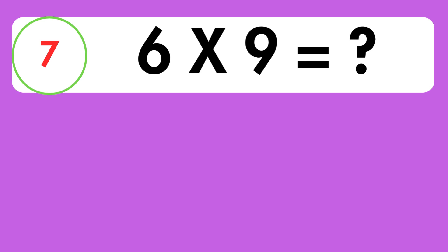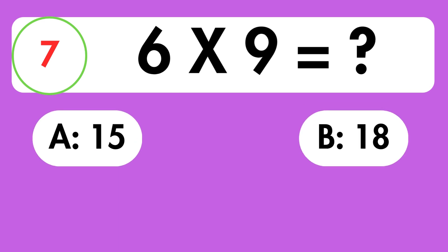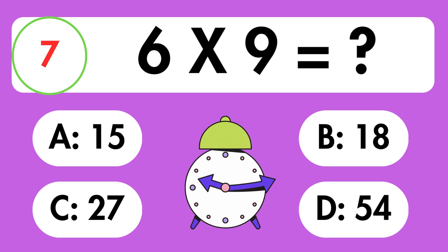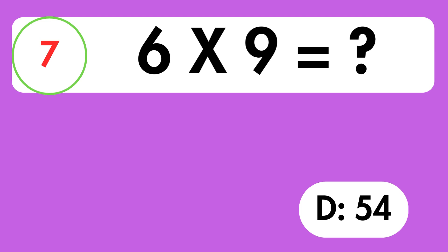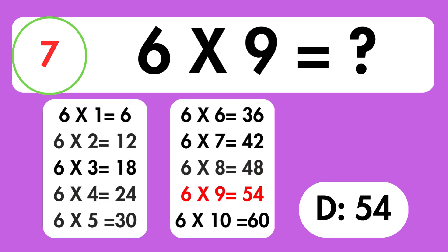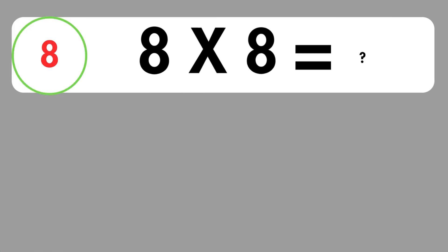7 times 8 is equals 56. That was a tricky one. Question 7. What is 6 times 9 equals? Time's up. The answer is 54.